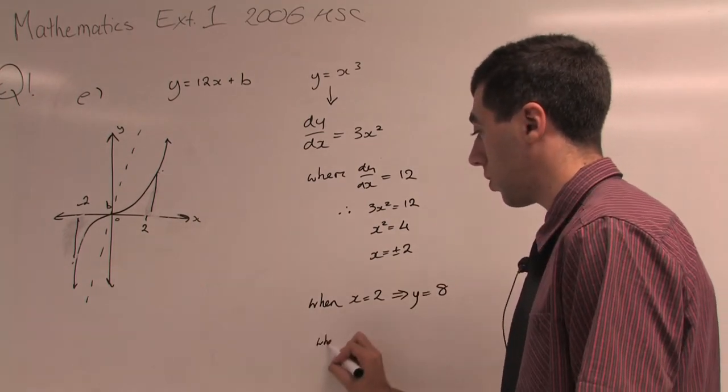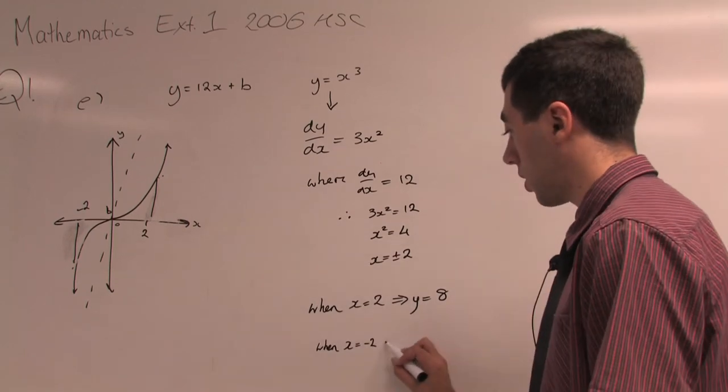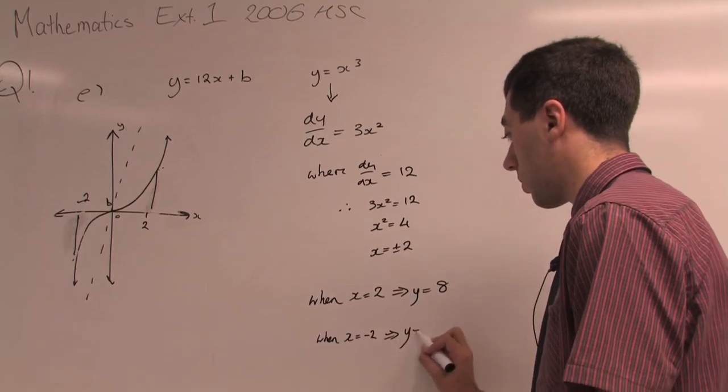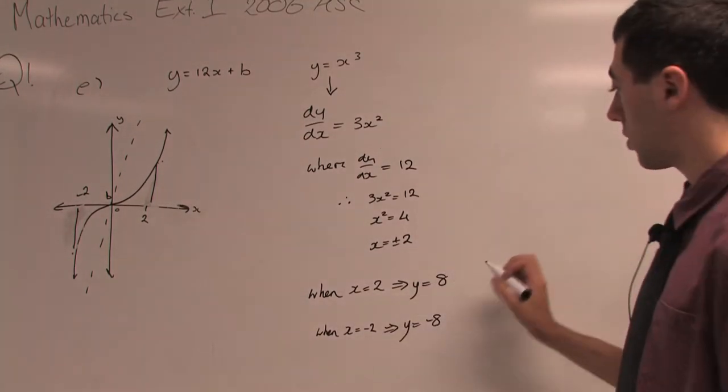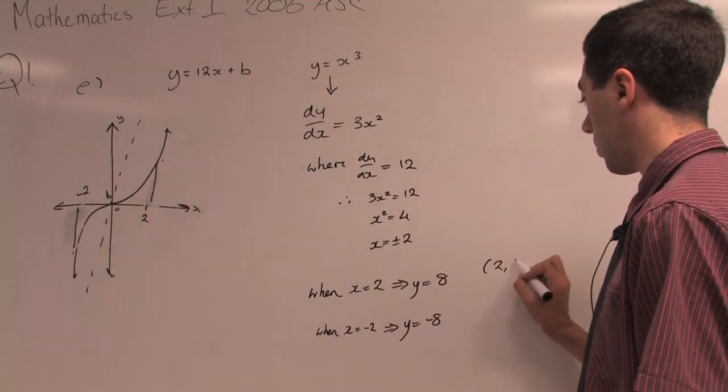And when x = -2, that should tell you that y should be -8. So those are now our two points where the gradient equals 12.